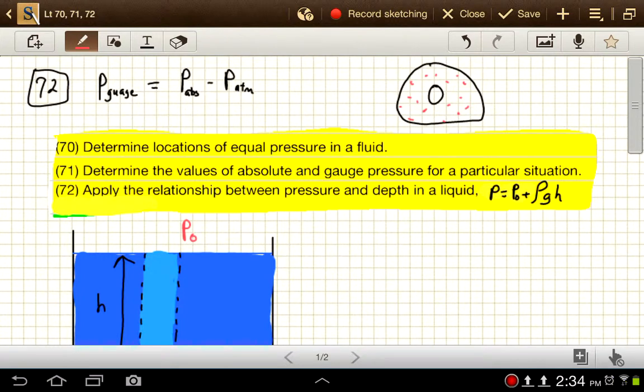Now when you patch that tire and inflate it to 30 psi, what that really means is 30 psi more than the atmospheric pressure. So your absolute pressure there would be about 45 psi instead of 30 psi because we've got about 15 or 14.7 psi in the atmosphere.